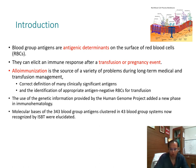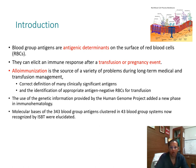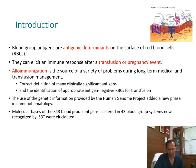Since the human genome project was completed, we have a lot of genetic information, and this added a new phase in immunohematology — molecular immunohematology. We now know 343 blood group antigens clustered in 43 blood group systems, which have been recognized by ISBT and are now very well characterized.